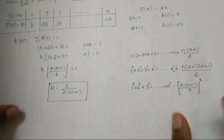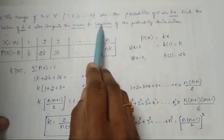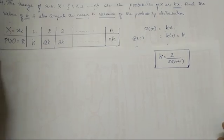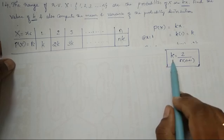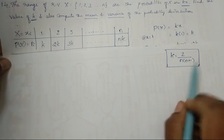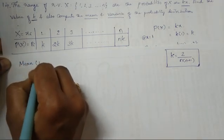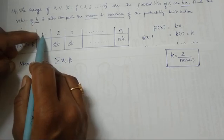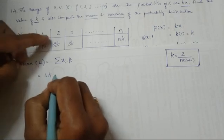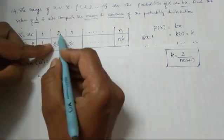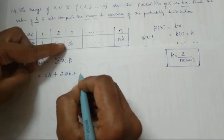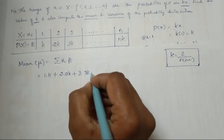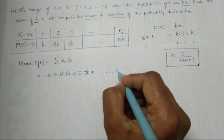After finding the value of k, we have to find the mean and variance. The formula for mean is μ = Σ(xᵢ × pᵢ). Substituting: 1×k + 2×2k + 3×3k so on up to n×nk, where k = 2/[n(n+1)].